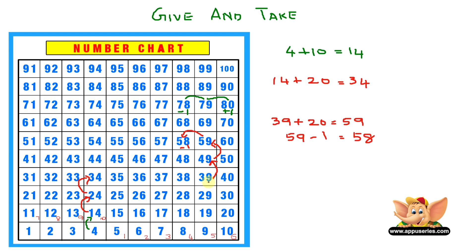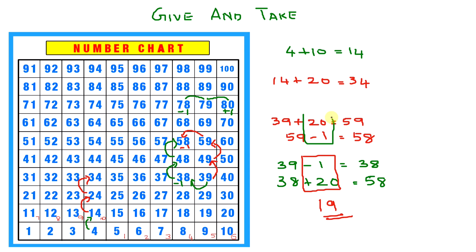Or we can also try this another way. We can start by jumping one step back. That's 39 minus 1 equals 38. So now we jump up two rows. So that's 38 plus 20 equals 58. So as you can see, 20 minus 1, which is 19. So we jumped 19 squares to reach 58. See how you can do it in different ways?